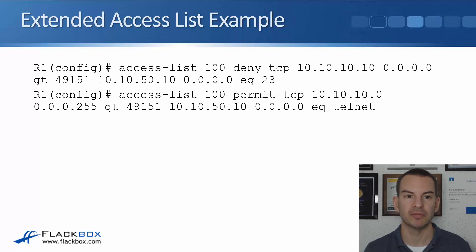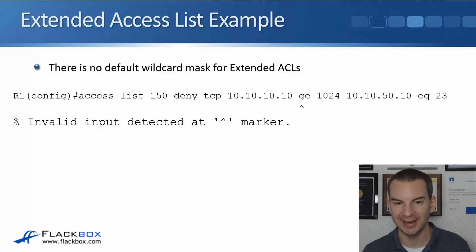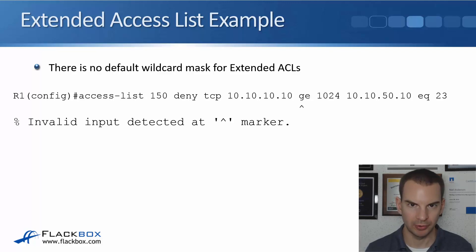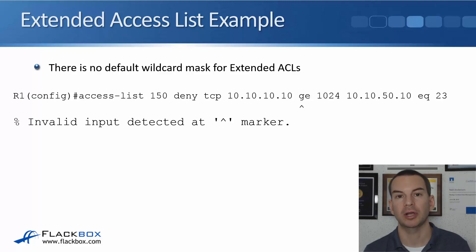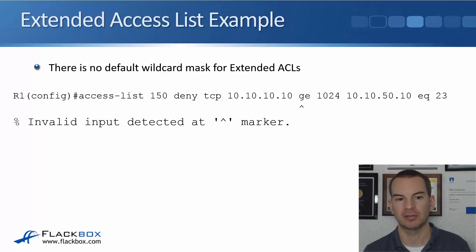The extended ACL does not have a default wildcard mask. The standard ACL defaults to 0.0.0.0 (a /32), but extended does not. If you put in an extended ACL without specifying the wildcard mask, it will give you an error message. For example, 'access-list 150 deny TCP 10.10.10.10' and then going straight to the source port without a wildcard mask will result in an invalid input error showing exactly where the mistake occurred.